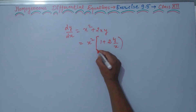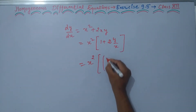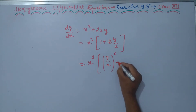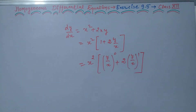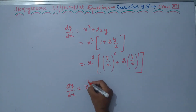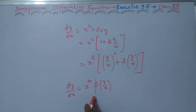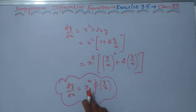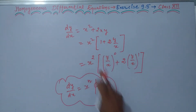We can write this as x squared into (y/x)^0 plus 2 times (y/x)^1. This means: if any differential equation dy/dx equals x raised to power n into a function of y upon x, and we can express it this way, then the differential equation is called a homogeneous differential equation of degree n. This example is a homogeneous differential equation of degree 2.